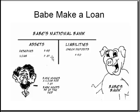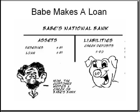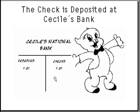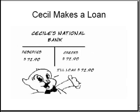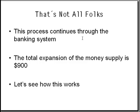Let's say Dave decides to loan that eighty-one dollars. Keeping in mind that he still has nine dollars at the Fed, if the customer writes a check on Dave's bank and deposits that eighty-one dollars at Cecil's bank, Cecil's reserves increase by eighty-one dollars. Cecil can send in the required reserves of eight dollars and ten cents and now has excess reserves of seventy-two dollars and ninety cents to loan out.